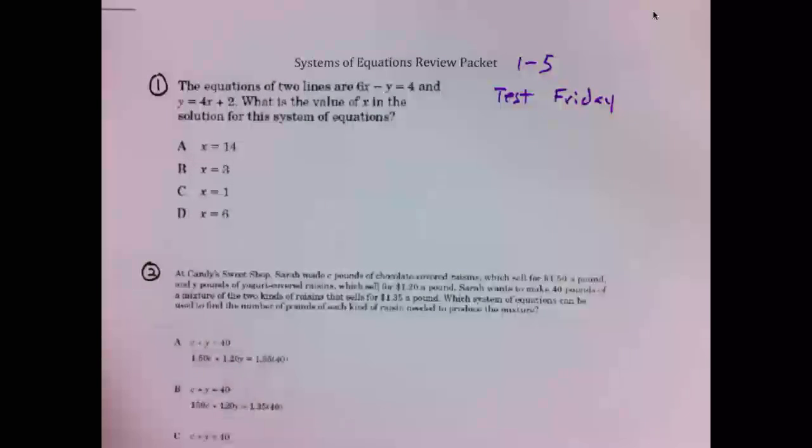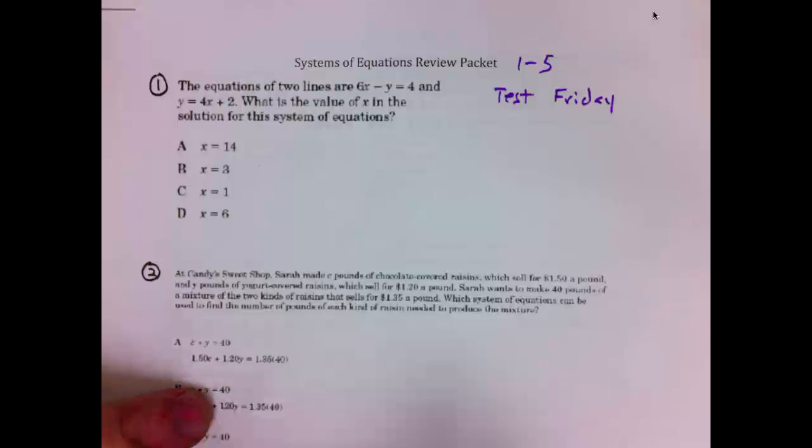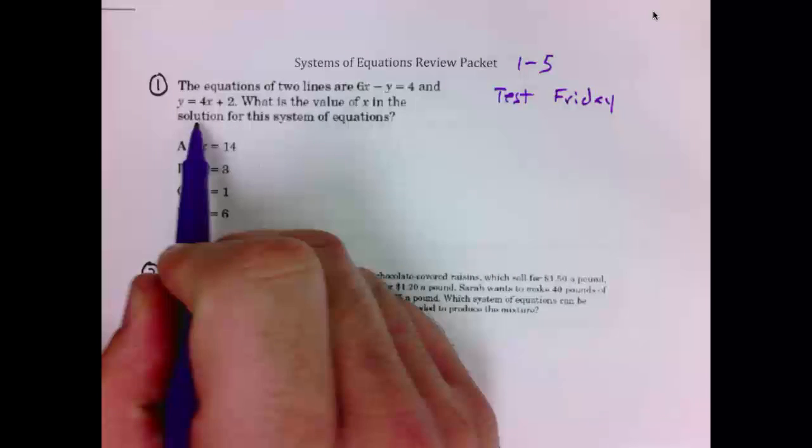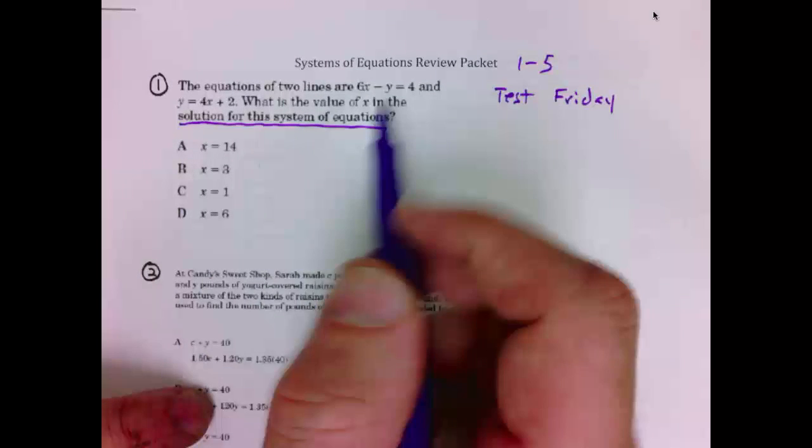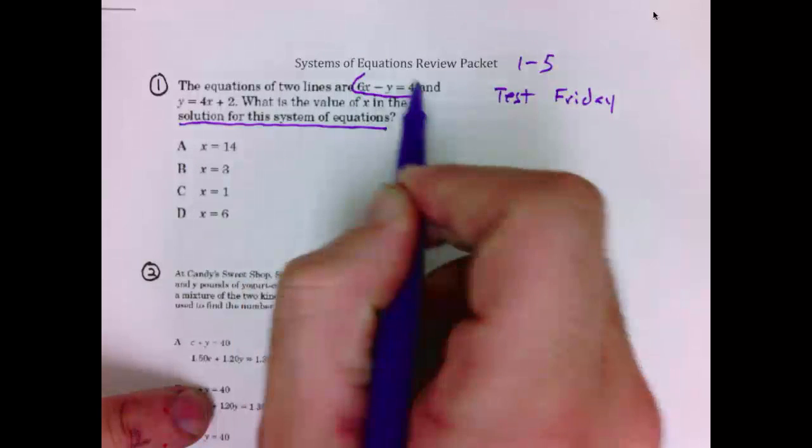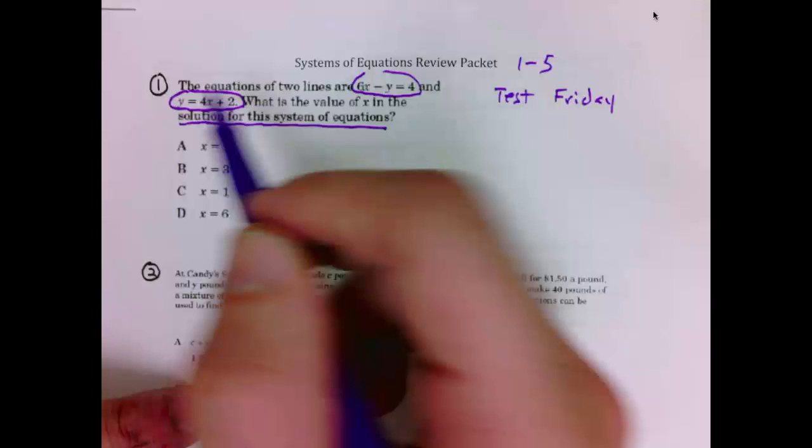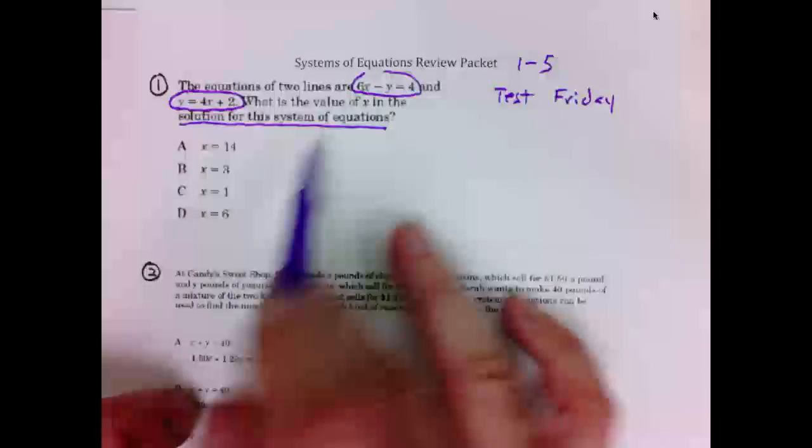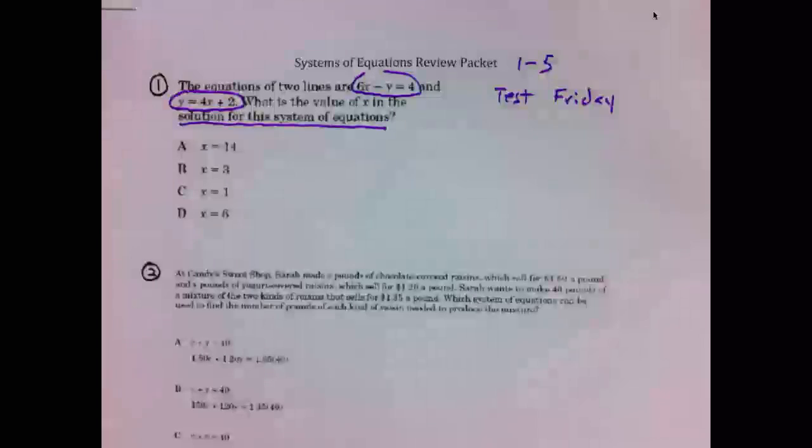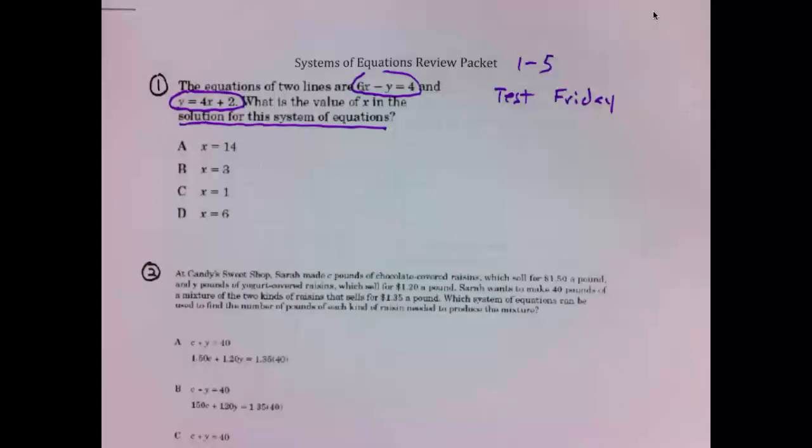Number 1, it says what is the value of x in the solution for this system? We know a system is two equations. We have one equation here, another equation here. The solution is the point of intersection of those two lines. It is the one point that those two lines have in common and we are simply looking for the x value. Well, our calculator can assist us with this problem.